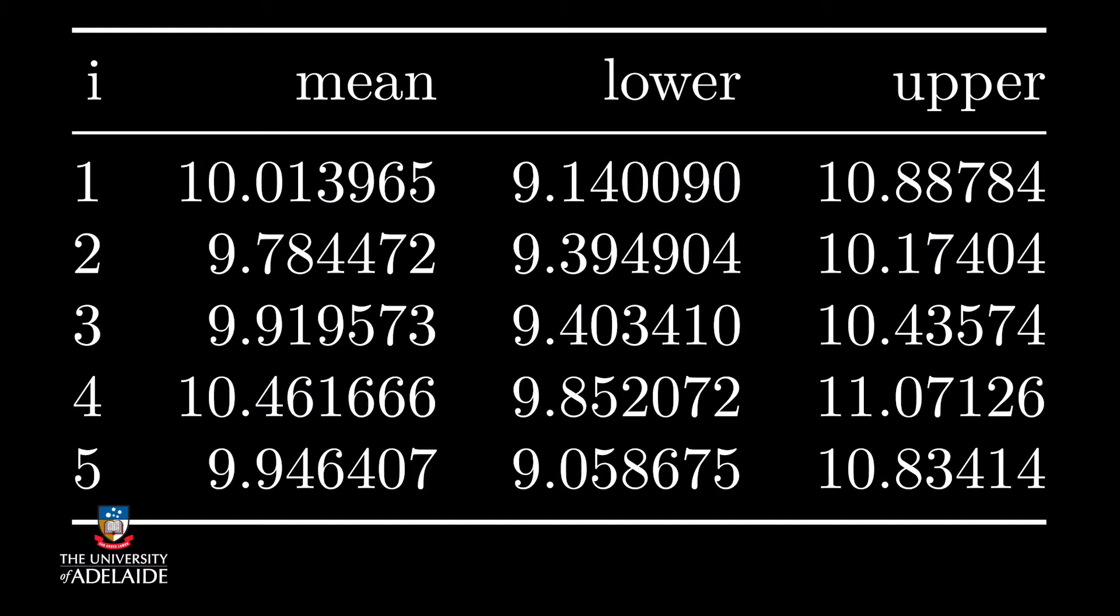To illustrate, I've simulated a population that's normally distributed with a population mean of 10. I then took a sample of size 10 and calculated the 95% confidence interval for the population mean using the formula I just showed you. I repeated this process again and again. Here are the first five results.